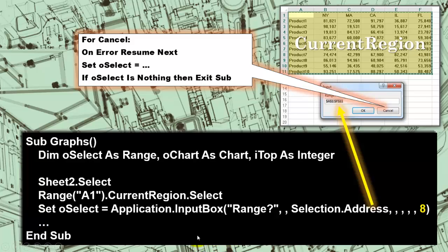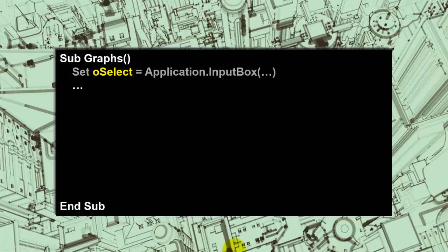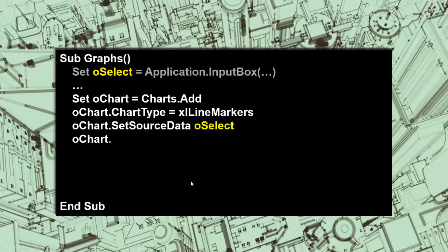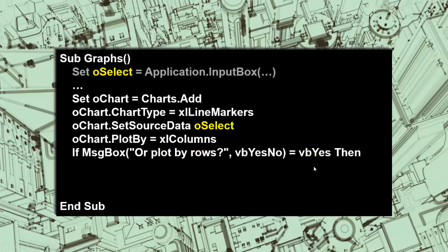We set OChart to the collection of charts by adding a new one to the collection. We set the chart type of OChart — I decided on line with markers. We set the source data to OSelect, which is what you selected in the input box — maybe the entire current region or part of it. I decided to plot by columns, but if the user says yes to plot by rows, then we change PlotBy to Excel Rows.